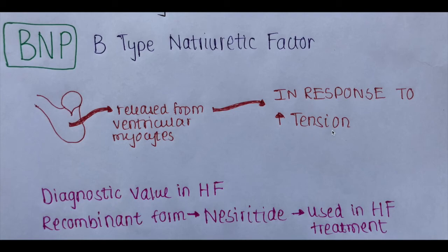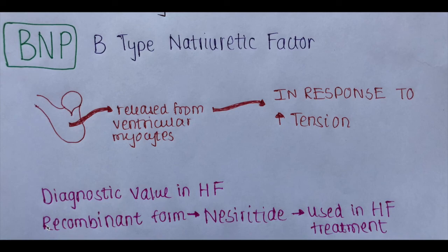In conditions such as heart failure, where ventricles contract too strongly, there is increased tension, causing release of BNP. Therefore, BNP has diagnostic value in heart failure, as patients show increased levels of BNP. There is also a recombinant form available for BNP — nesiritide — and increased levels of BNP are used in the treatment of heart failure.